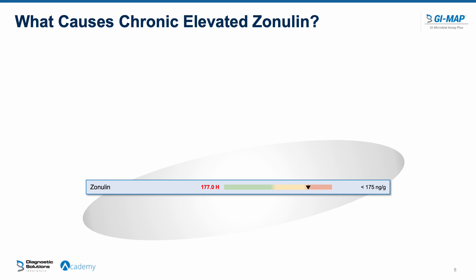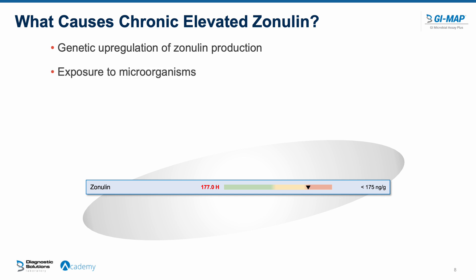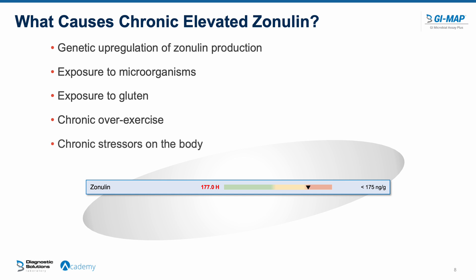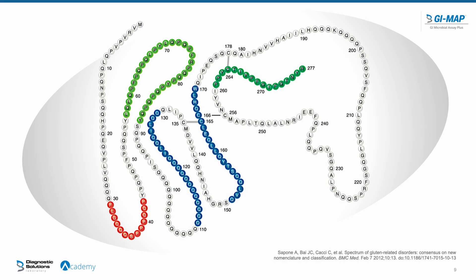Why do some people produce zonulin more persistently than others? A few major factors include: genetic upregulation of the zonulin genes, chronic exposure to microorganisms, exposure to gluten — more pronounced in celiac patients and those with non-celiac gluten sensitivity, though gluten triggers zonulin release in everybody — chronic overexercise, and chronic stressors on the body. These are some of the major factors that can lead to chronic elevation in zonulin.